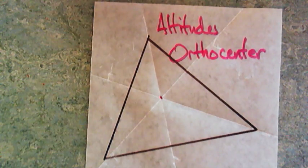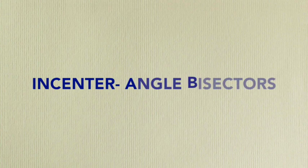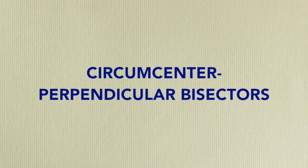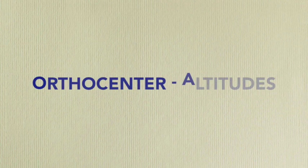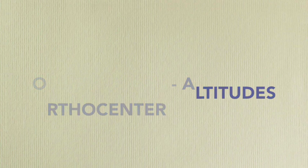I am going to stop right there because what's special about that point is for the next video. Let's review a little bit. We started with the angle bisectors, and that's the incenter, equidistant to each side. The perpendicular bisectors make the circumcenter, equidistant to each vertex. The medians make a centroid, and it divides each median into two segments, one which is half as big as the other. And then finally the orthocenter, which is made with altitudes. We will see you next time.